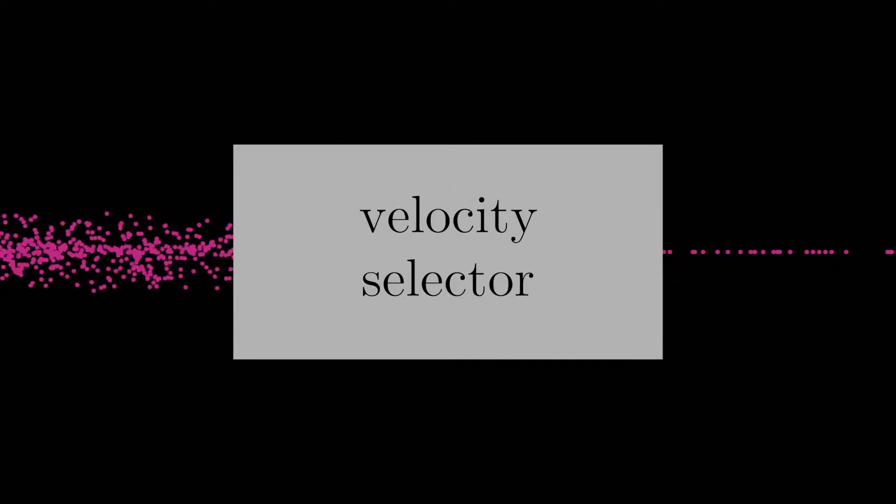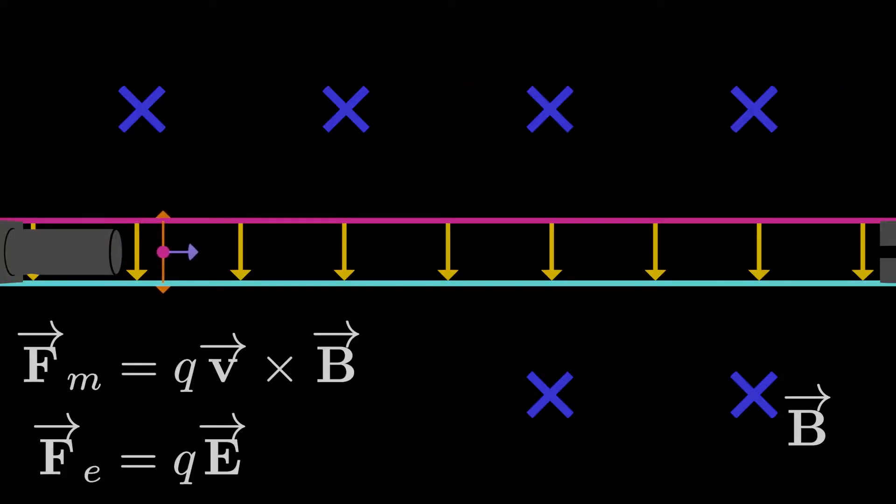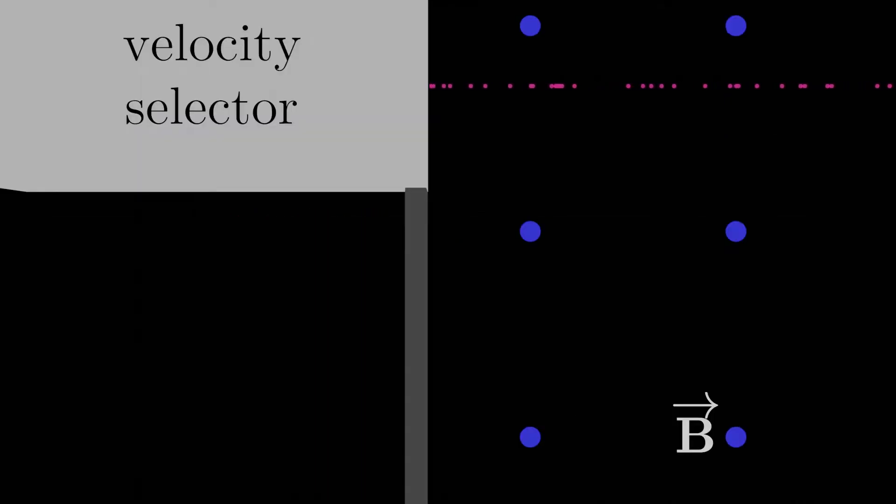The way a mass spectrometer works, or at least one kind of mass spectrometer works, is as soon as charges exit the velocity selector, we have a magnetic field that acts on the charged particles, but this time without the electric field. Remember in our velocity selector we had both an electric and a magnetic field, which created forces that perfectly balanced out for charges moving at just the right speed. But now we have only a magnetic field. It doesn't even have to be the same magnetic field as the one inside the velocity selector. So what happens now?